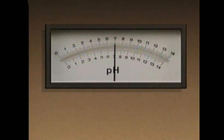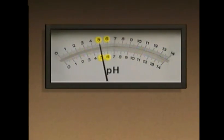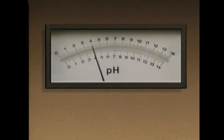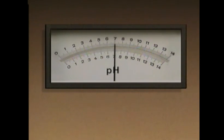Between each two whole numbers on the pH scale, in either direction, the concentration of the solution changes by a factor of 10. For example, from 6 to 5, the acidity increases by a factor of 10, and from 5 to 4, the acidity increases 10 times more. So a solution with a pH of 4 is 100 times more concentrated than a solution with a pH of 6. The same progression holds true for alkaline solutions — a solution with a pH of 9, for example, is 10 times more concentrated than a solution with a pH of 8.